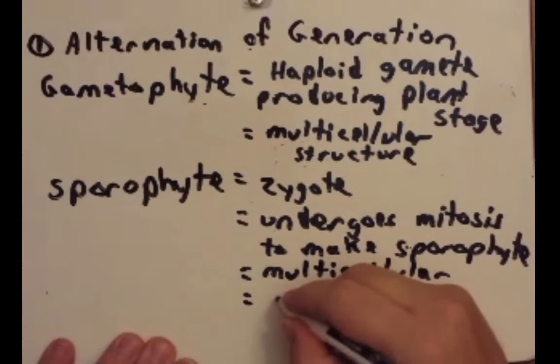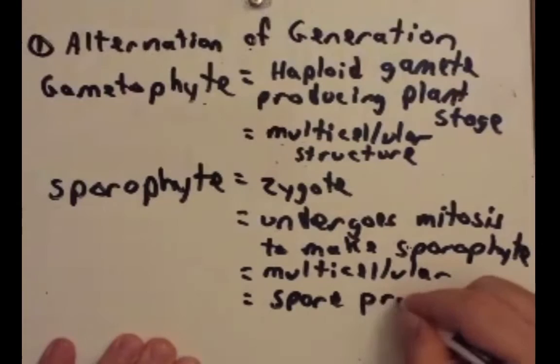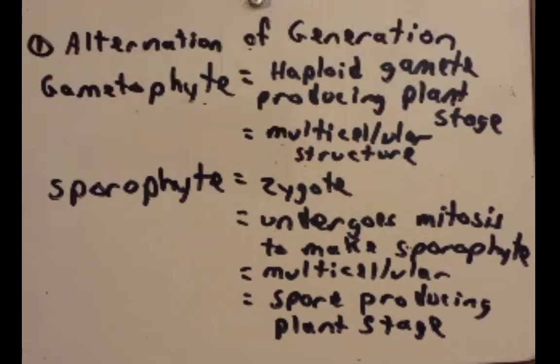It's important to remember that plants go through this alternation of generations where at one part of their life they're a gametophyte and at another part of their life they're a sporophyte. Some plants will spend the majority of their life as a gametophyte and other plants the dominant part of their life would be the sporophyte. I'm going to explain this in a different way by showing you a figure. So let me erase this.